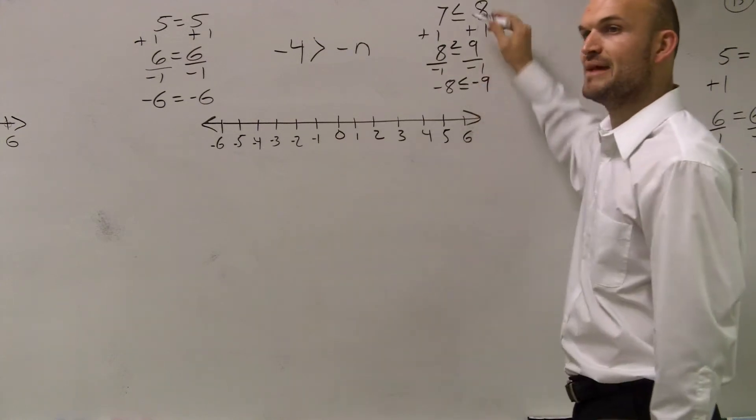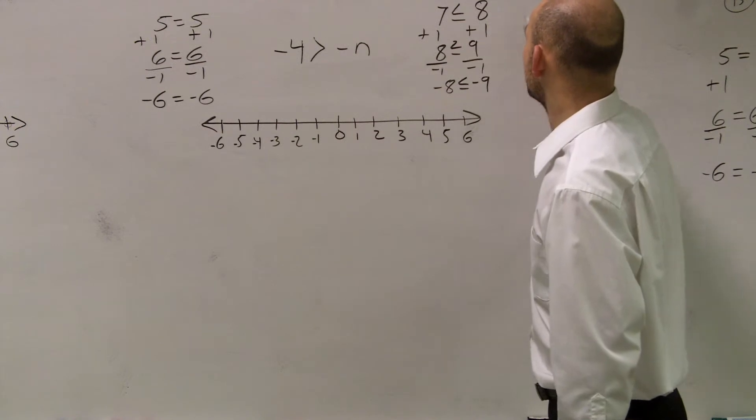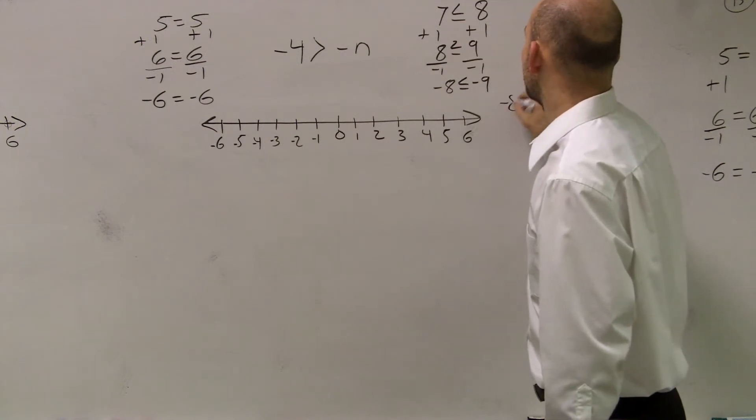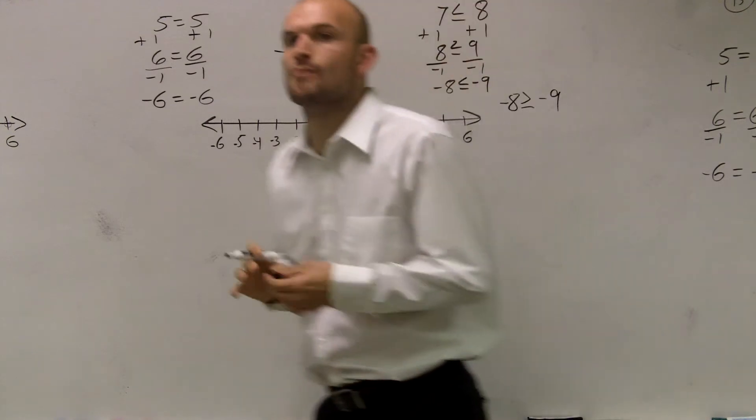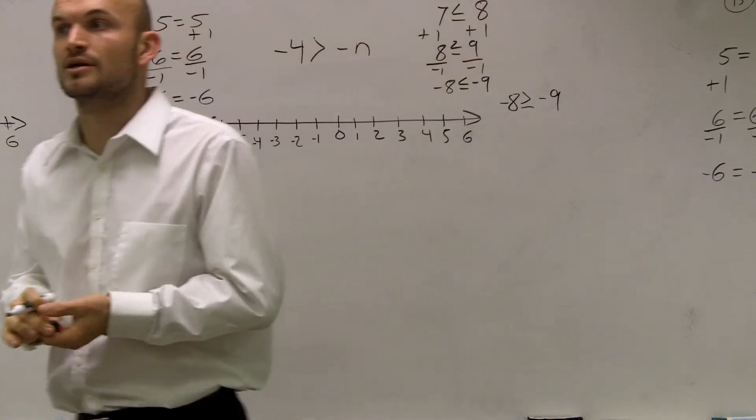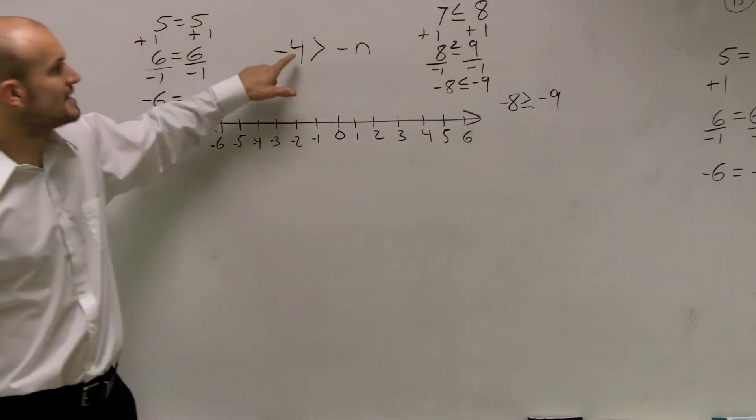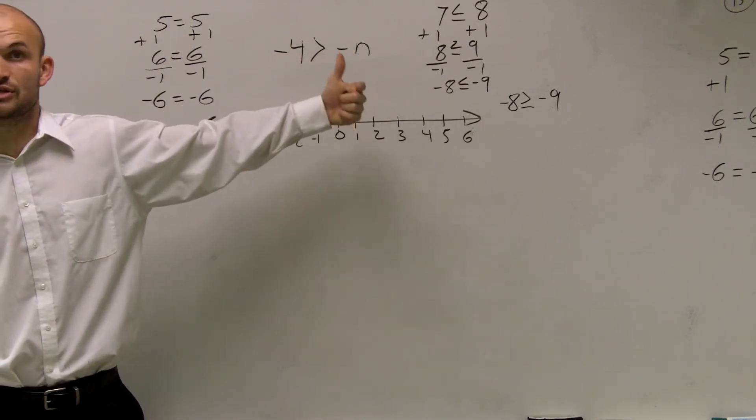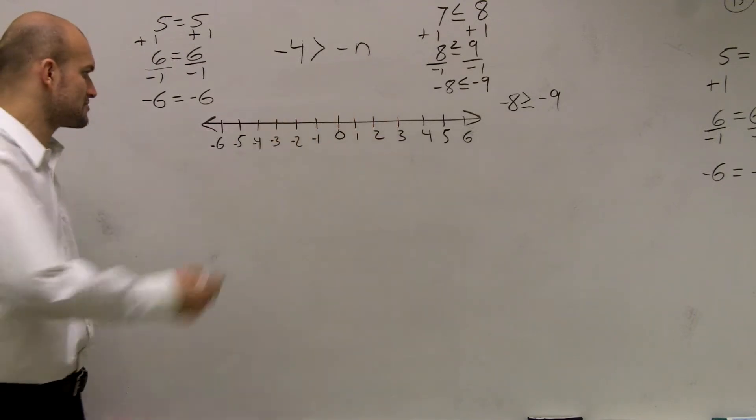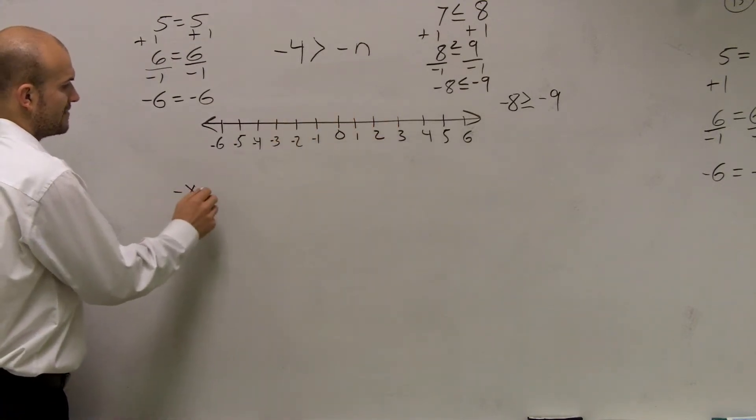Therefore, to make this inequality true, I need to flip the sign. So whenever you divide or multiply by a negative number, flip the sign. If you look at this problem, first of all, we don't ever solve for a negative variable. We always solve for the positive variable, just like when you were solving equations.